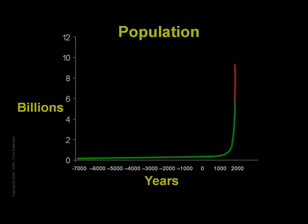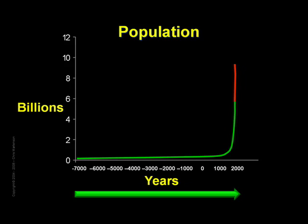It is world population, and because it is only growing at roughly 1% per year, we need to look at several thousands of years to detect this hockey stick shape. The green is history, and the red is the most recent UN projection of population growth for just the next 42 years.